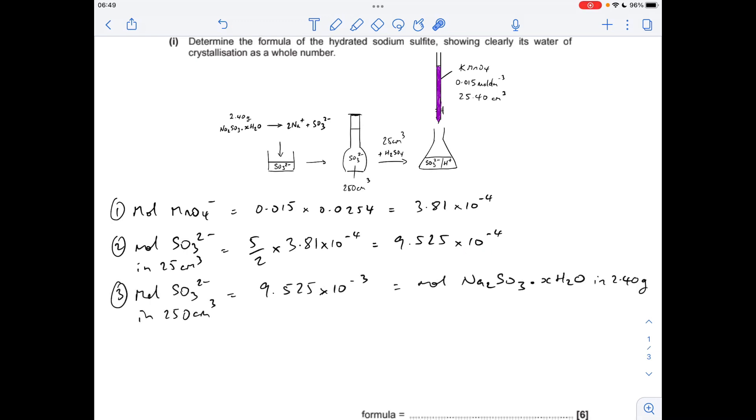Next thing we do is multiply by 10 to get the moles of sulfite ions in the 250 cm³ solution. Obviously we do that because 25 was a tenth of that original solution volume. So that's 9.525 times 10 to the minus 3. And then if you just remember where these sulfite ions came from, they came from the dissolving of the salt. And we established that the ratio of sulfite ions to salt was one to one, so we now know the moles of the hydrated salt in that 2.4 gram sample.